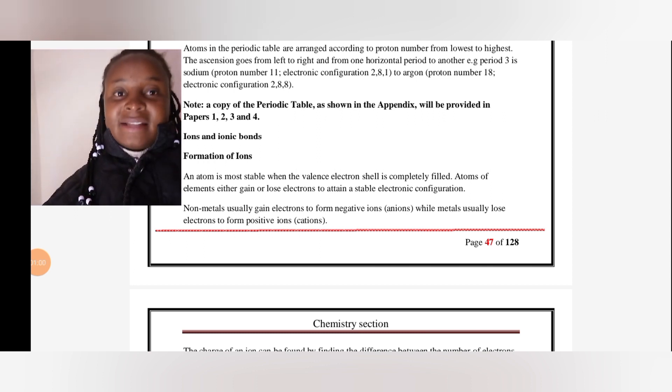Non-metals usually gain electrons to form negative ions called anions. Metals tend to donate electrons, forming positive ions called cations.